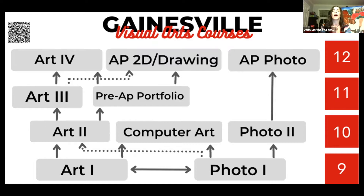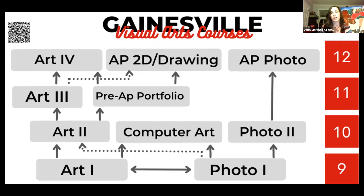Art One is an entry-level course where we baseline everybody's skills. We work on shading, drawing skills, basic painting skills, ceramic skills — which is clay — mixed media, watercolor, and a lot of skill development. Photo One is digital photography, not darkroom photography. You do not need to have a camera; our department is well prepared with many cameras. Students work on MacBooks and use Adobe Photoshop, and membership to that is included with the class.